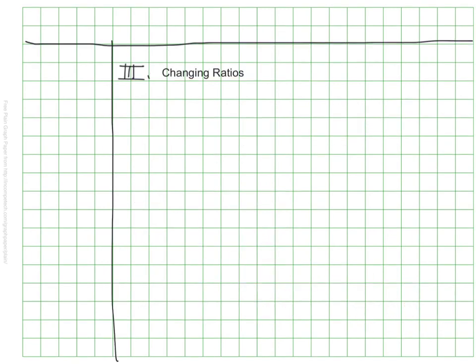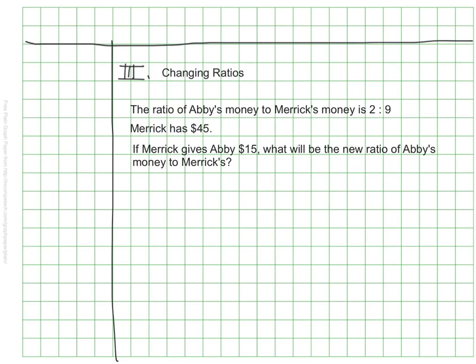The last example we're going to use this tape diagram for is when we are changing ratios. This one's a bit trickier. So we know the ratio of Abby to Merrick's money is a ratio of 2 to 9. But then I'm throwing something new at you. I'm asking you to look at what a new ratio would be if I change it by taking some of Merrick's money and giving it to Abby. However, with my tape diagram, I can still set this up as I've set up all the previous problems.